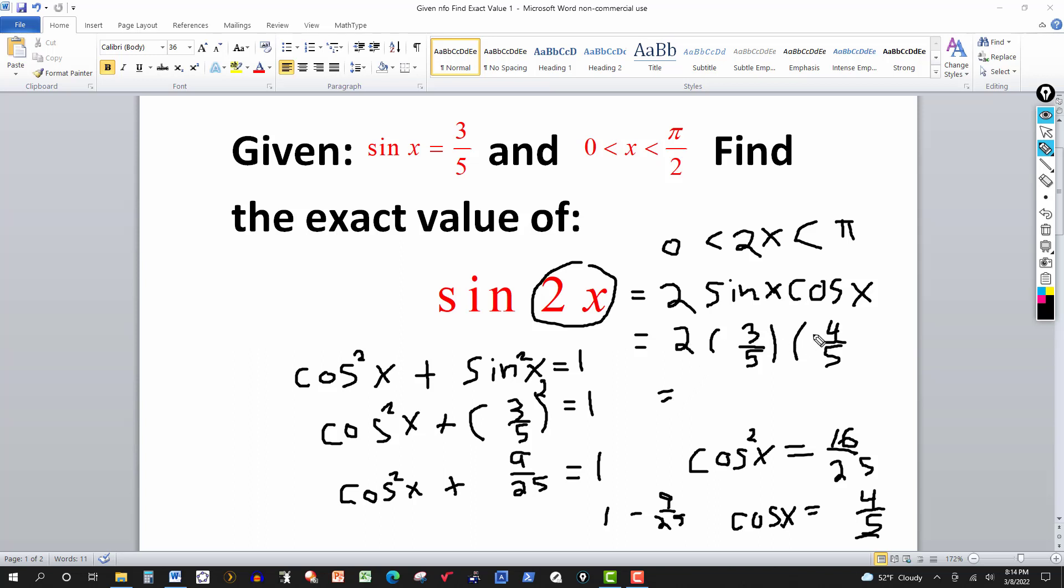So if I multiply this out, 2 times 3 is 6, times 4 is 24, and 5 times 5 is 25. And that's your result for that one. So we're using a double angle identity. Now let's do one more.